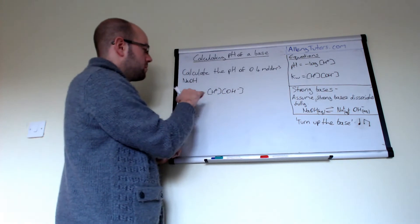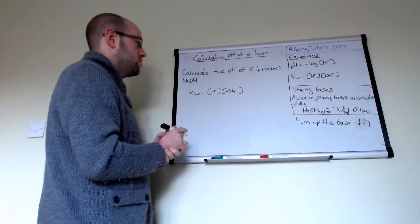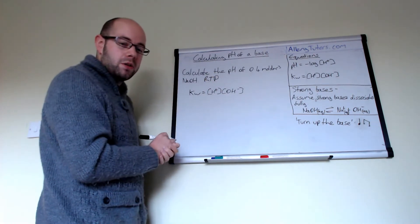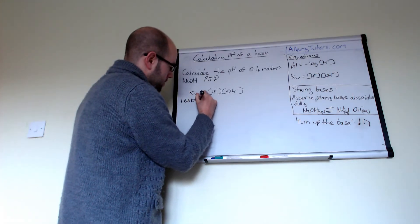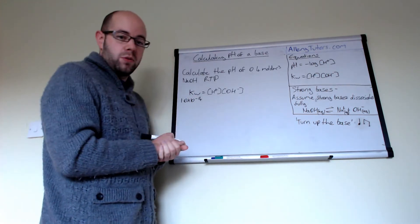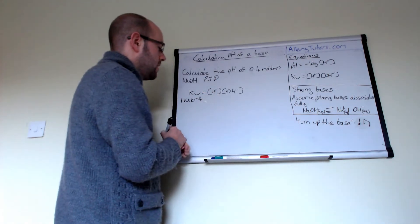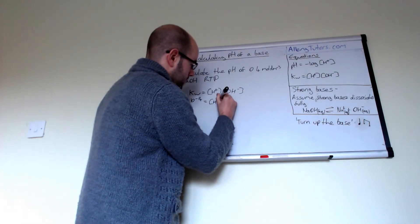We know the value of Kw at room temperature and pressure. If this is room temperature and pressure, then the value of Kw is 1 times 10 to the minus 14. That's always fixed at room temperature and pressure. And that equals the concentration of H plus, which we don't know yet. That's what we're trying to work out.